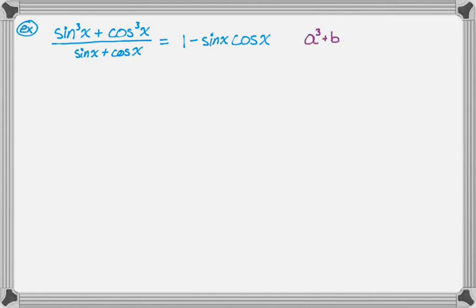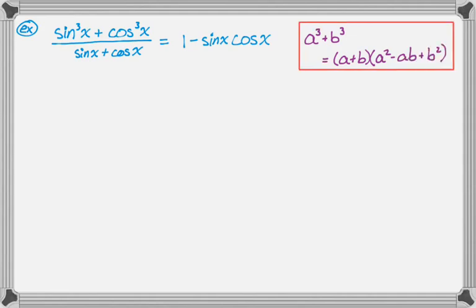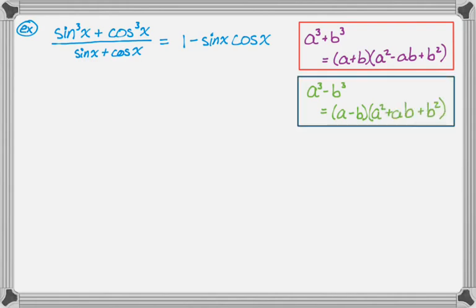We have a³ + b³ equals (a + b)(a² − ab + b²). You might also recall a difference of cubes: a³ − b³ equals (a − b)(a² + ab + b²).